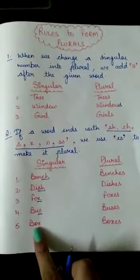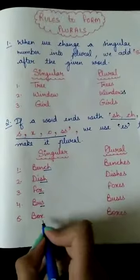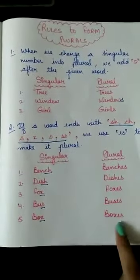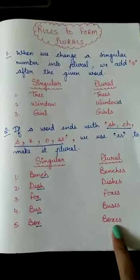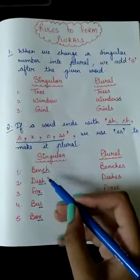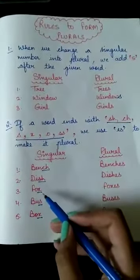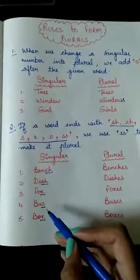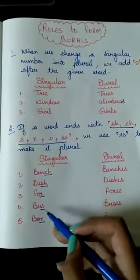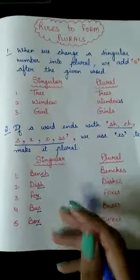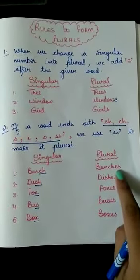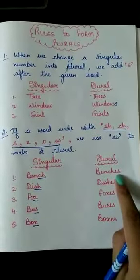And the last one is box. Here, we are having X at the end of this word. Boxes. So, you must have noticed whenever there is C, H, S, H, X, S, X, when a word is ending with these alphabets or letters, then we will write E, S at the end of that word in order to make its plural form.